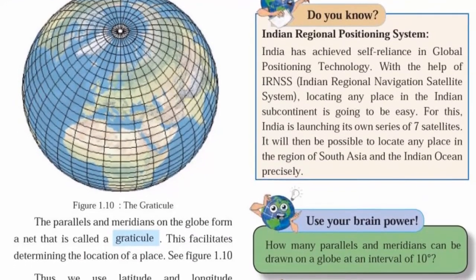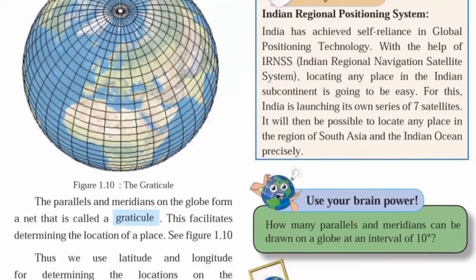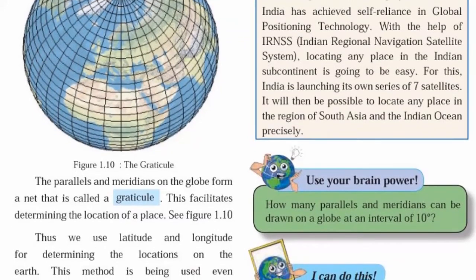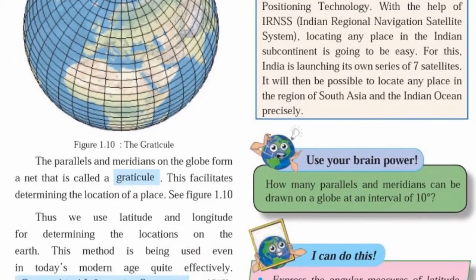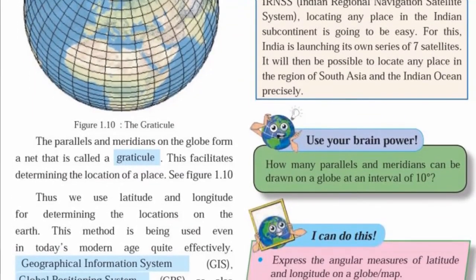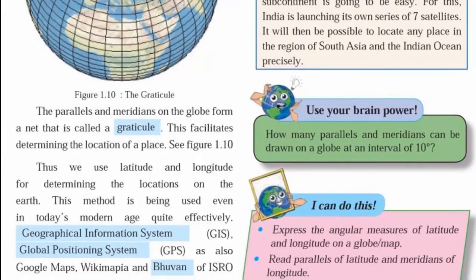Various systems for determining locations on the earth. Geographical Information System (GIS), Global Positioning System (GPS), Google Maps, Wikimapia, etc. are some other systems for determining locations.